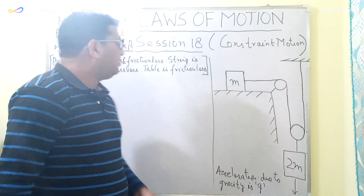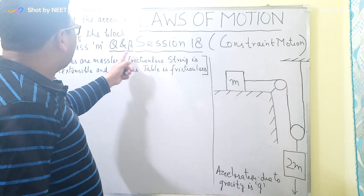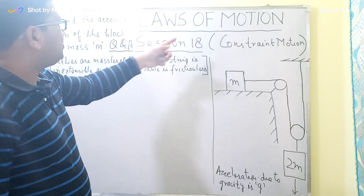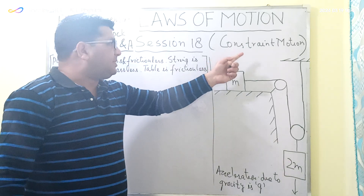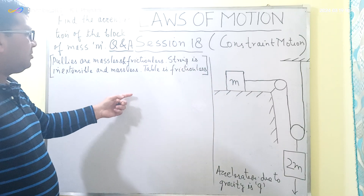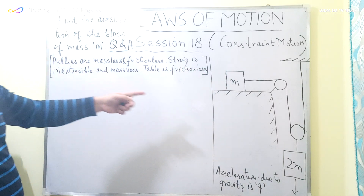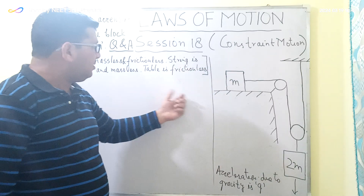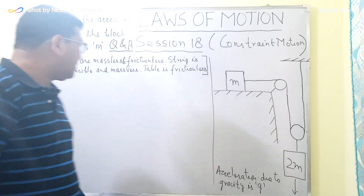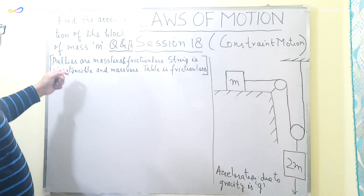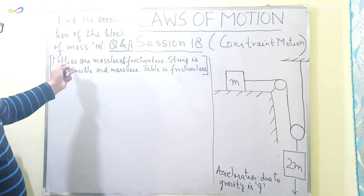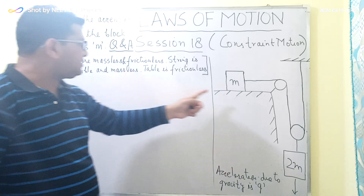Good morning students, this is Q&A session 18 from the playlist of Laws of Motion. The topic is constraint motion, and the question is written on the board along with a figure. The question is: find the acceleration of the block of mass M.